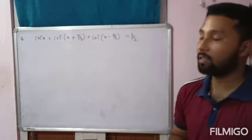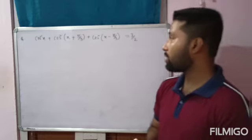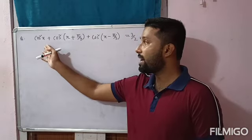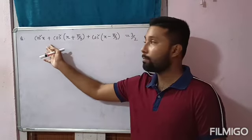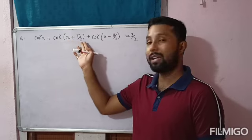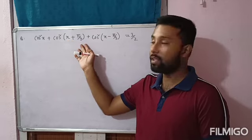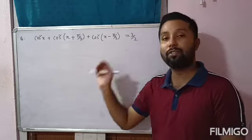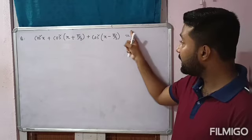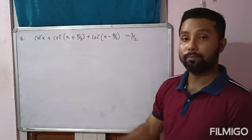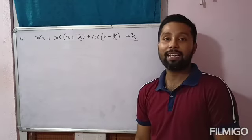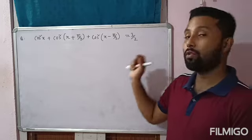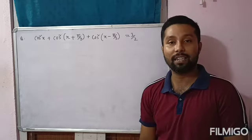This is an extra question. Prove that cos²x + cos²(x + π/3) + cos²(x - π/3) equals 3/2. Look at the right hand side here — only 3/2 is there. There is no trigonometric function on the right hand side.